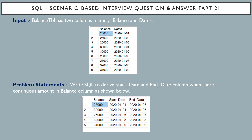Again, balance 26,000 has start date 6th January 2020 and end date 7th January 2020. And in the 8th row, balance is 32,000 with start date and end date both being 8th January 2020.